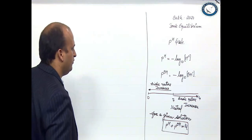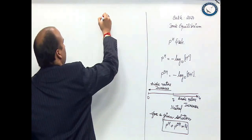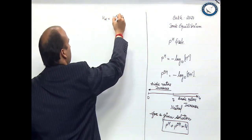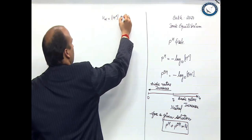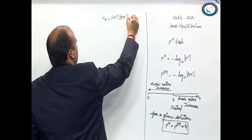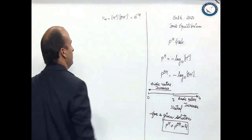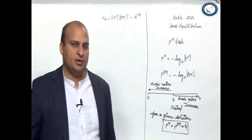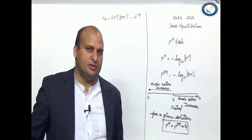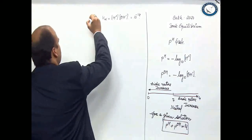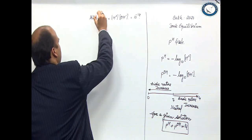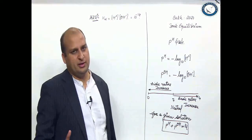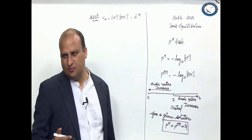First of all, let us recall that Kw is equal to H plus concentration into OH minus ion concentration, which is equal to 10 raise to the power minus 14. This is the ionic product of water, and the temperature we are taking here is 25 degree Celsius. So at 25 degree Celsius, Kw is equal to 10 raise to the power minus 14, or H plus into OH minus is 10 raise to the power minus 14.